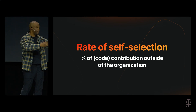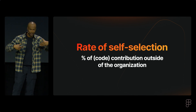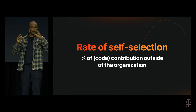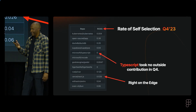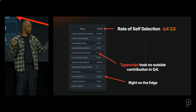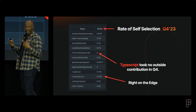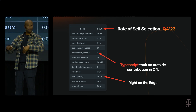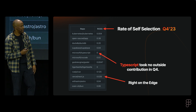Rate of self-selection is the idea of: anybody outside your team, how often do contributions come? Think of that one tool that's in the entire toolchain — who built this? TypeScript in Q4 had zero outside contributions outside of Microsoft. Those are things you can think through — this whole language is dictating the future of my career, maybe there's an opportunity to add some influence and participate in that ecosystem.